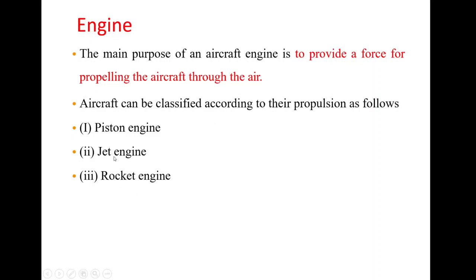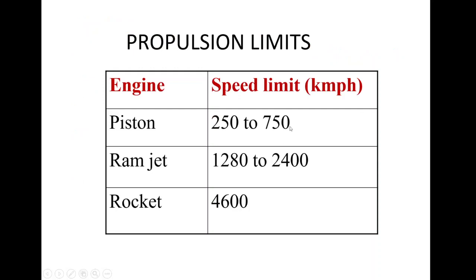There are speed limits based on the type of engine. For piston engines, the speed limit is 250 to 750 km/h. For ramjet engines, it is 1,280 to 2,400 km/h. And for rocket engines, it is very high — up to 4,600 km/h.